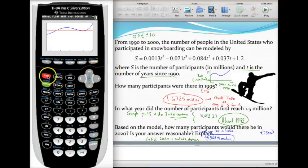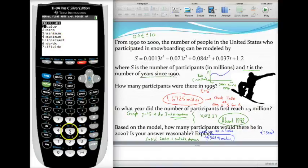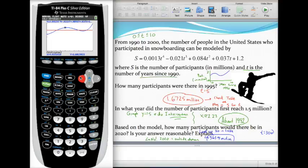To do this more accurately than using your table, hit second trace and then select option five intersect. All you'll need to do is trace your cursor using the left and right arrows so it's somewhere close to that intersection point. They're gonna ask you three questions but really you can just press enter three times. First curve press enter, second curve press enter, guess press enter. What it'll do is find me the exact intersection point when x is about 2.2. Now remember that represents two years after 1990 so that's about 1992, a couple months after 1992 I suppose.